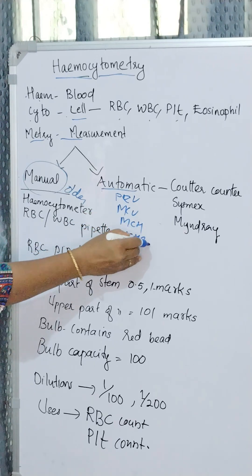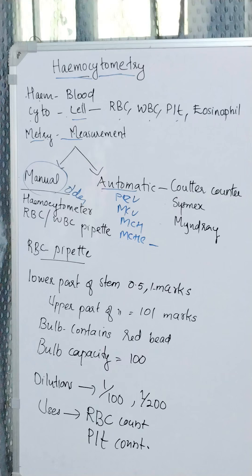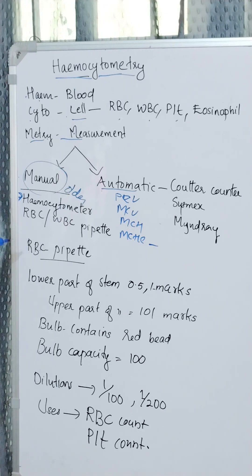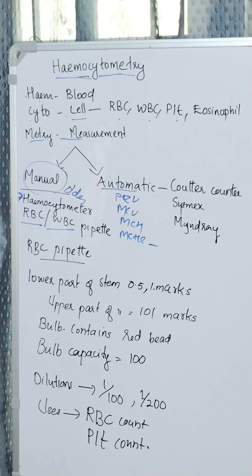The apparatus used for the manual method of cell counting is the hemocytometer. It consists of a special type of glass slide called a counting chamber and two special types of micropipettes: the RBC pipette and the WBC pipette. The parts of a micropipette are the stem, bulb, rubber tube, and a plastic mouthpiece. The stem is a narrow elongated part which is graduated.